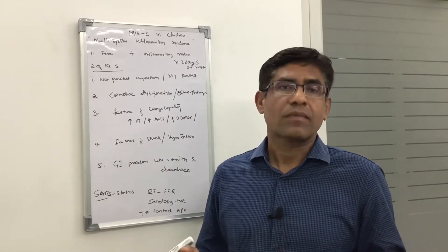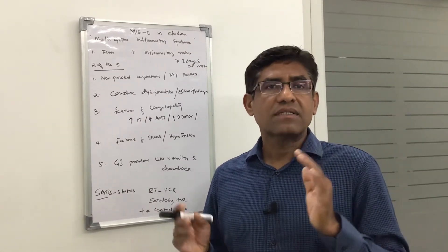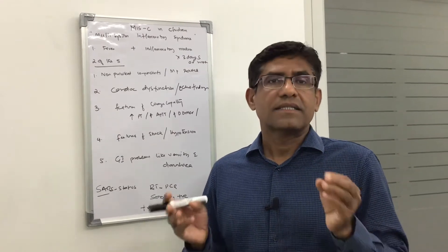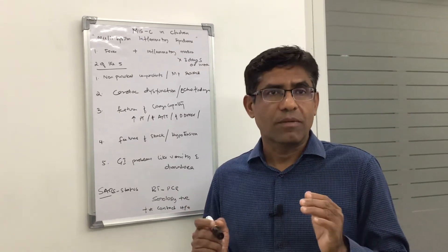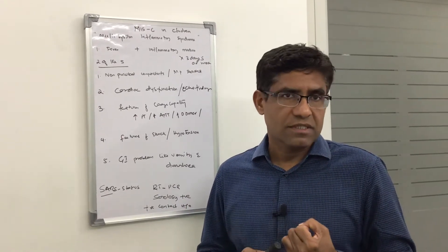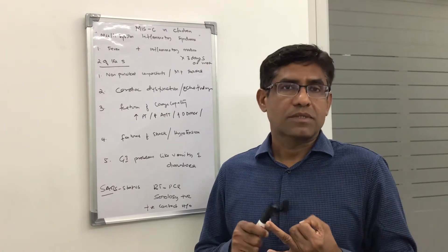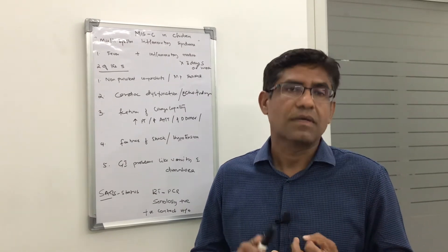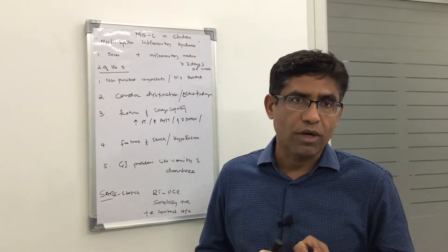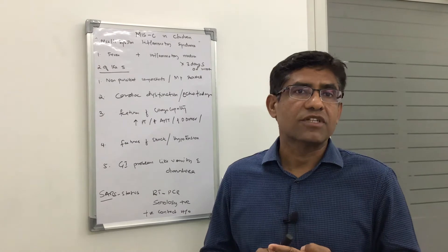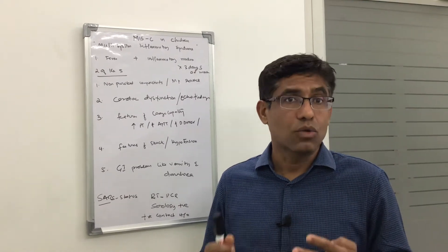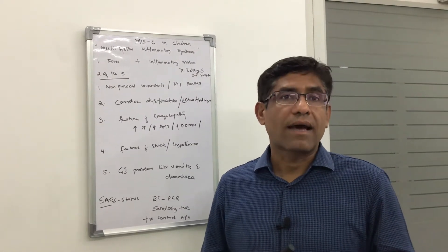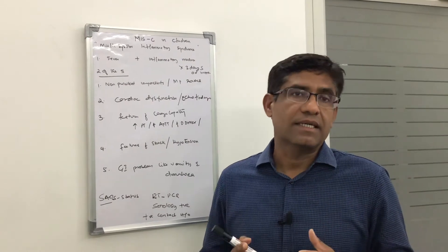However, after three or four weeks, some of the children have developed high-grade fevers, sometimes red conjunctiva (red eyes), rashes all over the body, having features of vomiting or loose motions, or having difficulty in breathing.